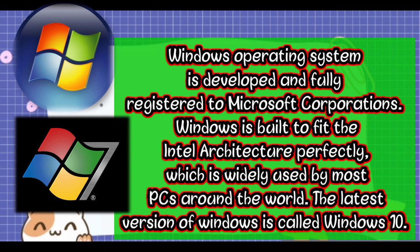The latest version of Windows is called Windows 10, but there have been other versions like Windows 8, Windows 7, Windows Vista, and Windows XP. It will interest you to know that Windows 7, which is an older version, was the most used as of 2016.